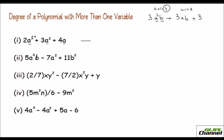For a polynomial with two variables, add the exponents of each term. For example, in the second problem, one term gives 3 plus 1 equals 4, and another gives 2 plus 2 equals 4 — so the highest degree is 4. You take the term with the highest total exponent as the degree of the polynomial. The coefficient — whether a fraction, negative, or positive — does not matter.